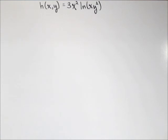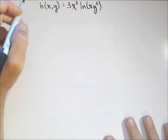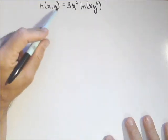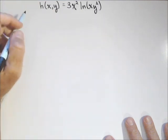One more example here of calculating partial derivatives. We'll do first and second order, and our function h of x, y is three x squared, ln of x, y squared.